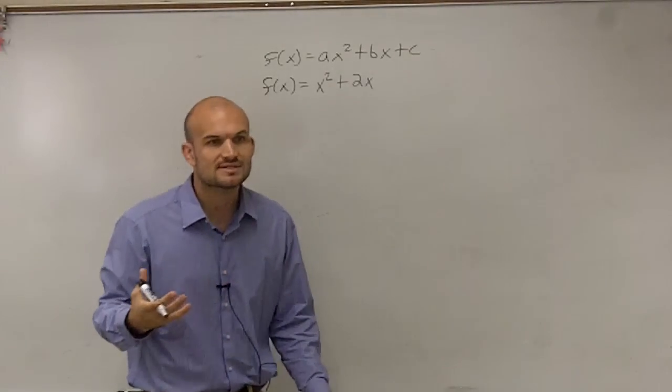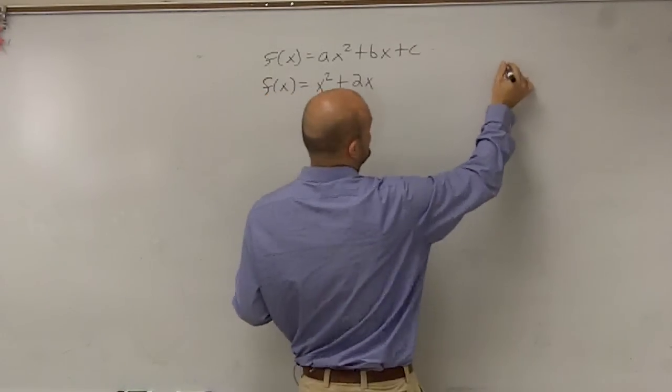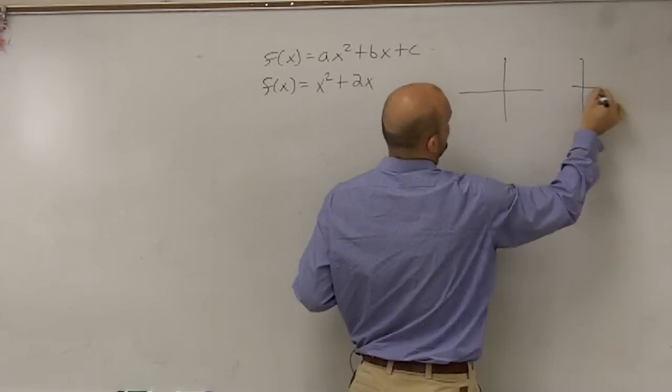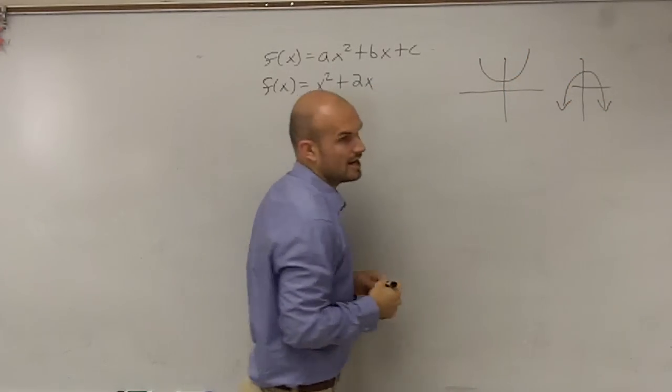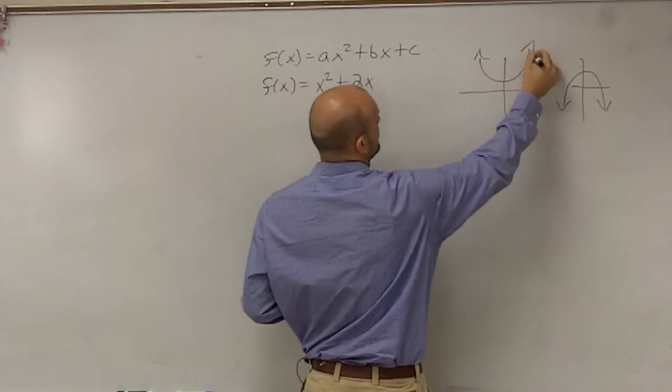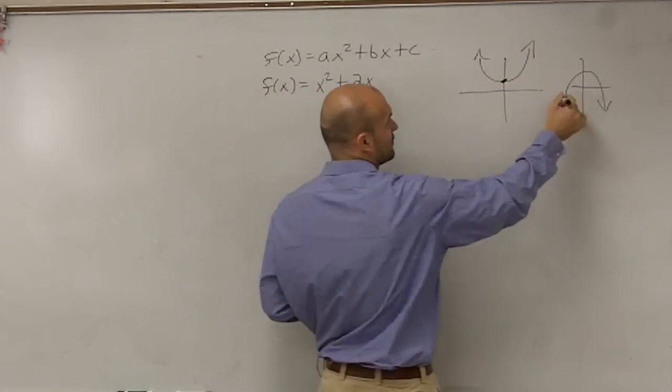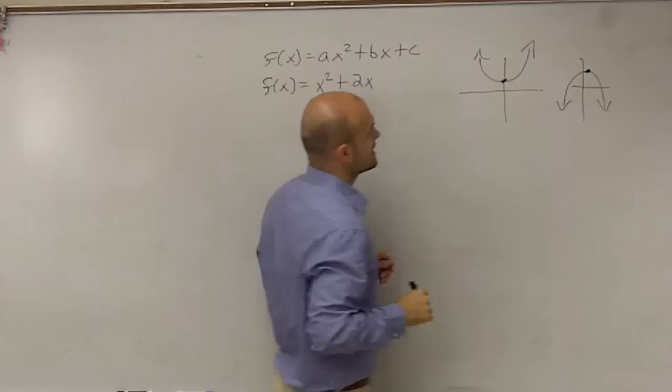And remember, what was it to determine if it was going to? Remember, when we looked at it, we had two different types of graphs. It either opened up or our graph opened down. And remember, when it opened up, we had a minimum value. And when it opened down, we had a maximum value.